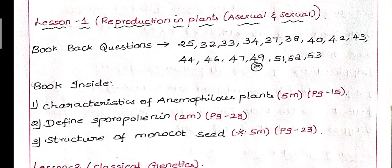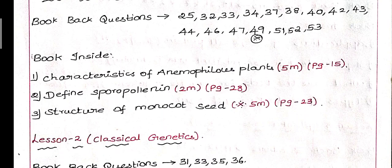There is a question of 49, structure of ovule. That is a very important question of this chapter, 5 mark is important. Next, in book inside, page number 15, there is a question on characteristics of anemophilous plants, 5 mark. Next is define sporopollenin, that is 2 mark, page number 28.